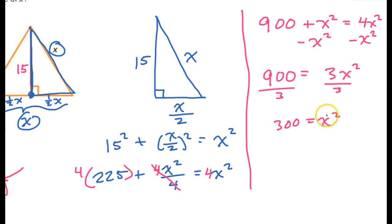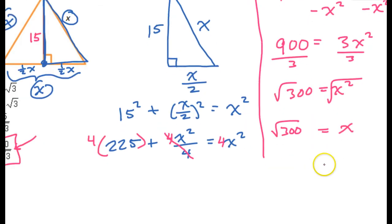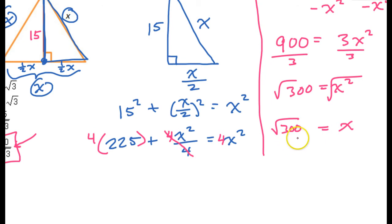So then we just have to take the square root of both sides. So that's going to give us, well, the square root of 300. So x is equal to square root of 300. This will simplify down to, well, 300 is 100 times 3. So that's going to be the same thing as 10 radical 3. So this is the answer.